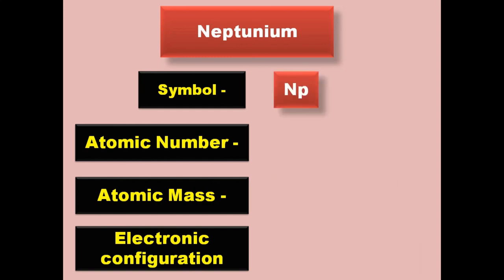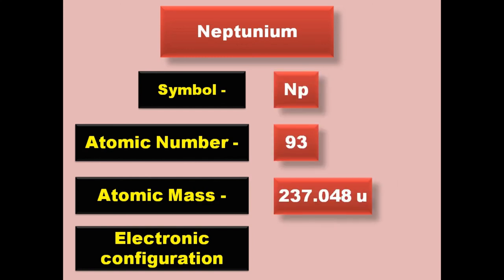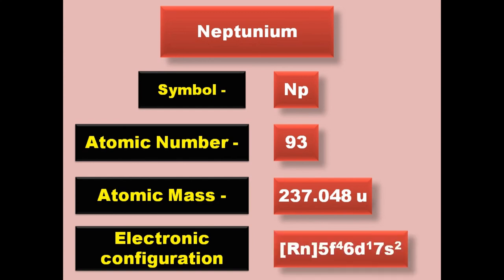Neptunium has symbol Np, atomic number 93, atomic mass 237.048, electronic configuration [Rn] 5f4 6d1 7s2. Neptunium is an actinide and exists in solid form at room temperature.